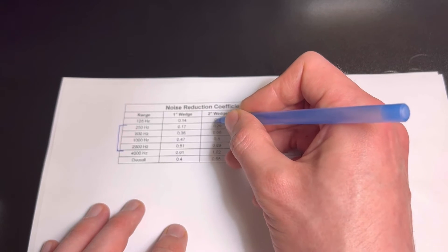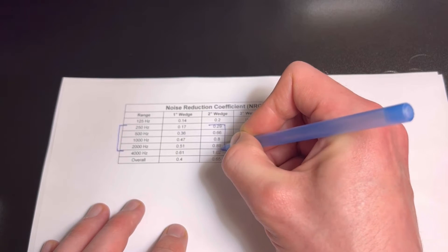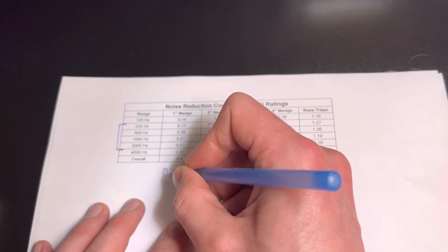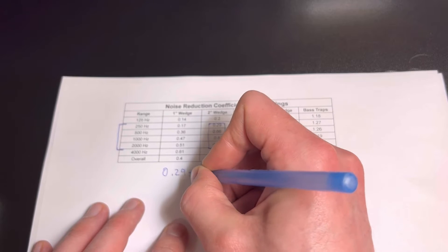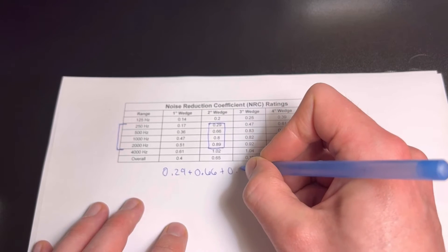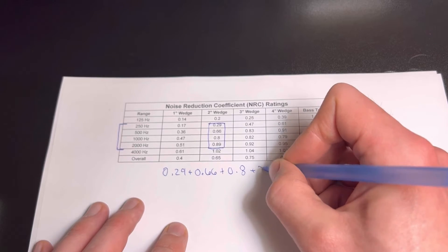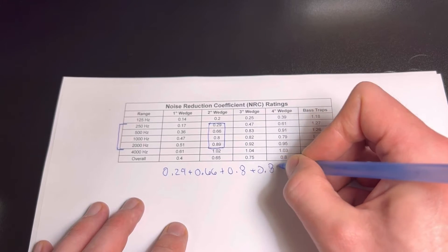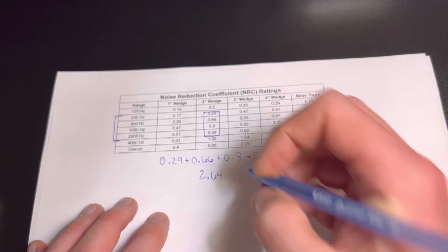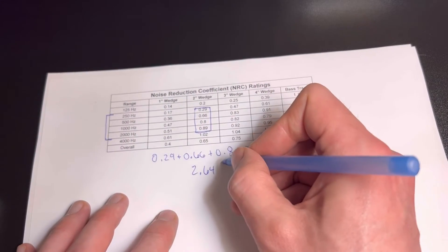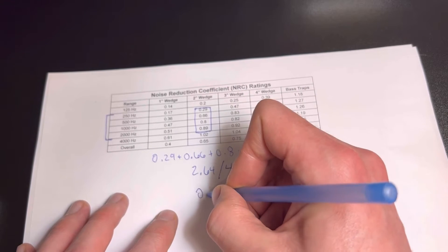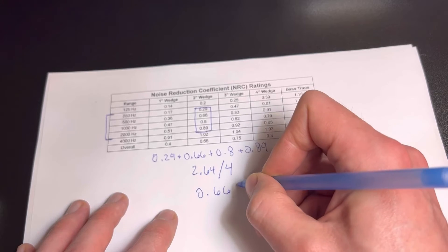So for the two inch wedge, we need to find the average of these four. So we'll do 0.29 plus 0.66 plus 0.8 plus 0.89, and that's going to give us 2.64. And to find the average, we're going to divide that by four, which gives us 0.667.